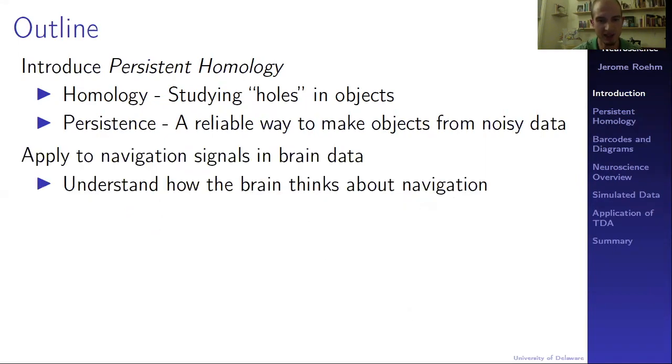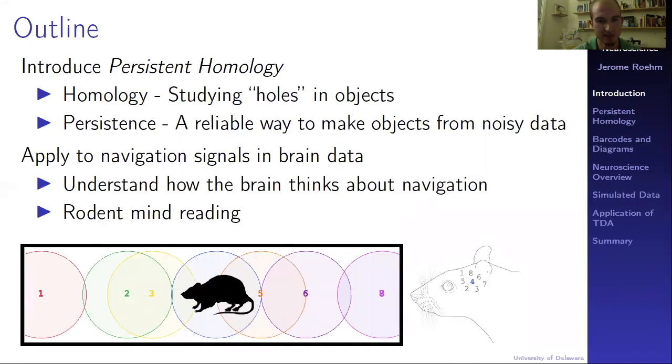We will then apply this idea to try to decode navigational signals in brain data in order to understand how the brain thinks about navigation. My pet name for this project is rodent mind reading, because in a sense, we are trying to read the rat's mind about what it's thinking, where it's planning on going and where it has been, as well as what environment it's in.